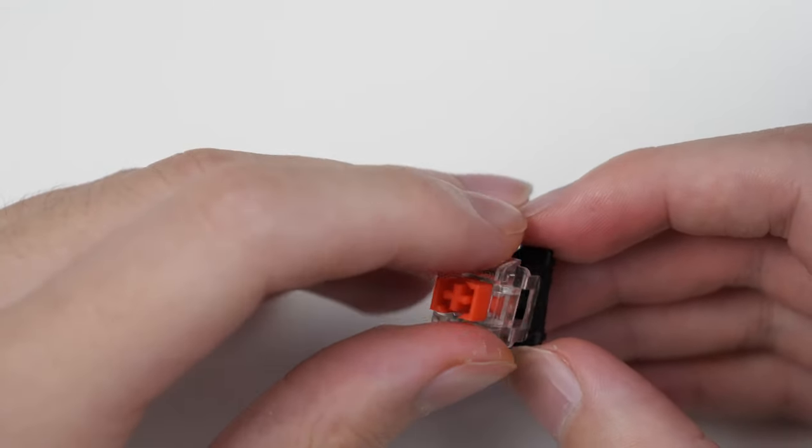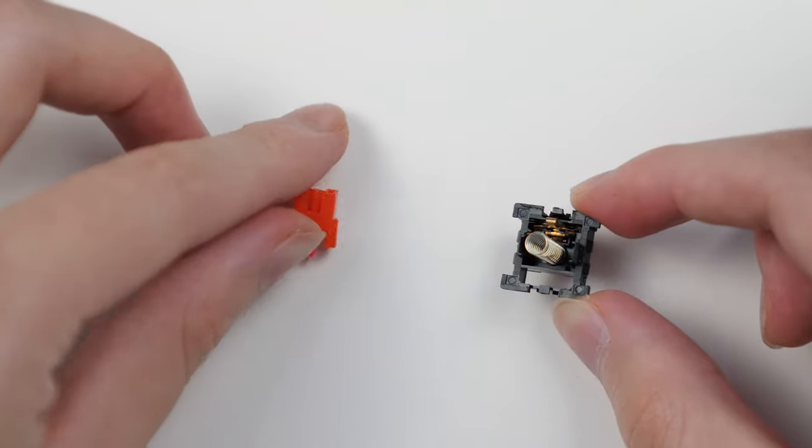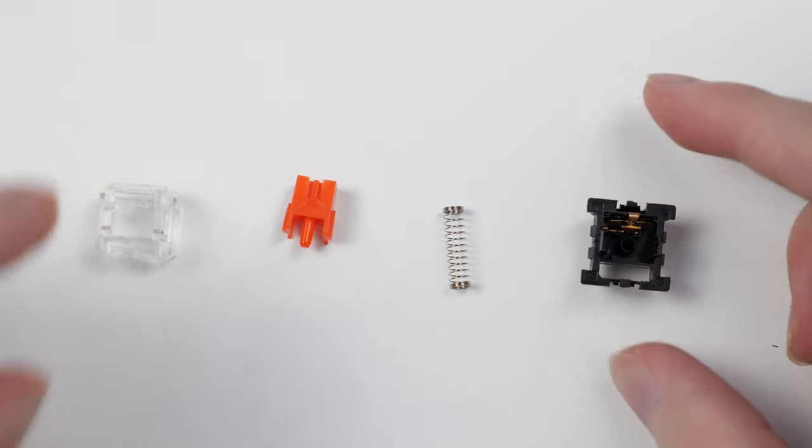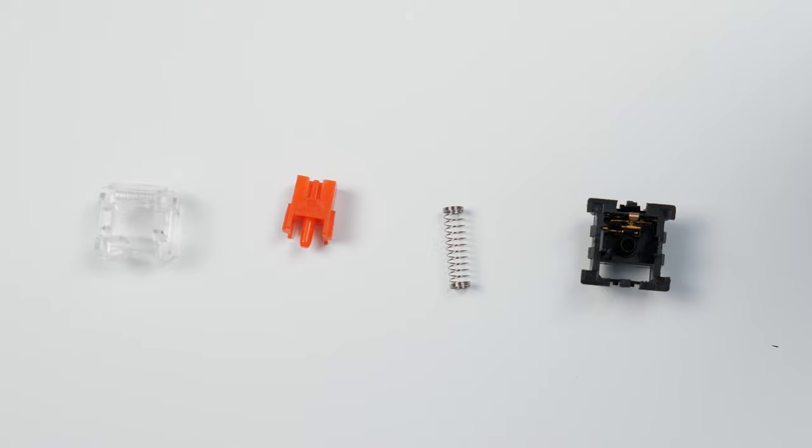When opening up the switch, make sure you're careful because there's a spring inside. But after it's open, you have four main components: the top housing, the stem, the spring, and the bottom housing.